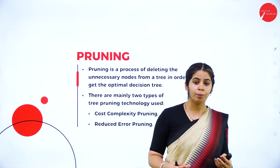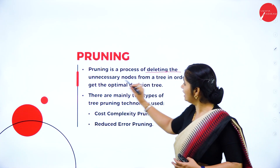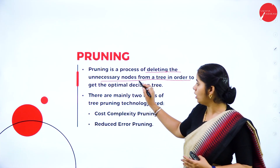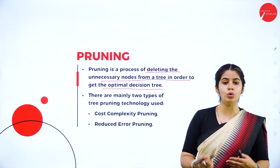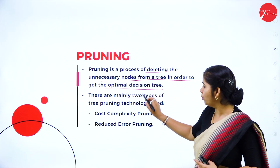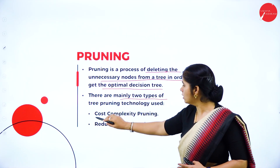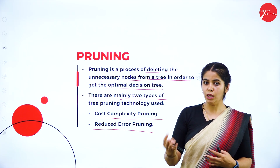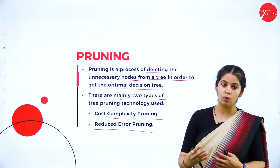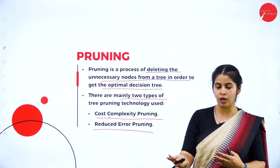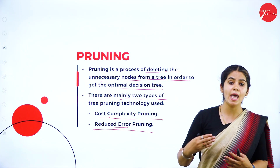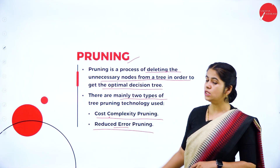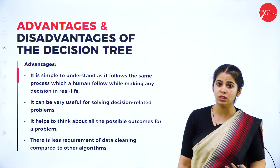Next is Pruning — the process of deleting unnecessary nodes from the tree, removing impurities, to get the optimal decision. There are two main types of pruning: Cost Complexity Pruning and Reduced Error Pruning. We can remove the impurity by using cost complexity, which needs more cost to implement, or by reducing the errors occurring in the tree.